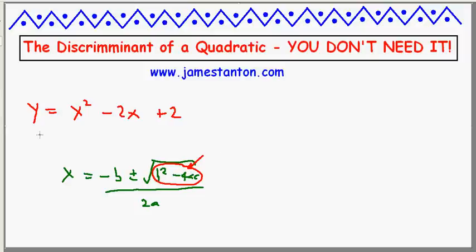So basically, an algebra book might have kids answer this question, how many times does this cross the x-axis? They're asking, have they memorized the discriminant? And they're going to check whether it's positive, negative, or zero.